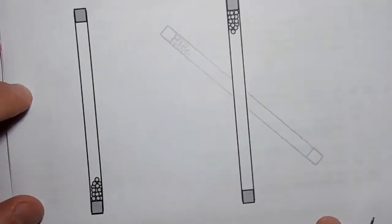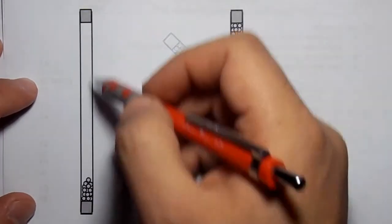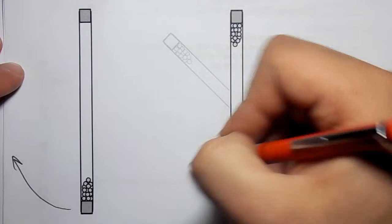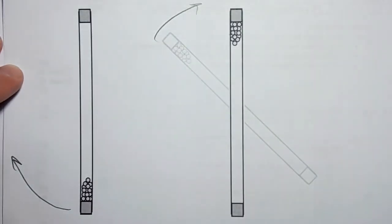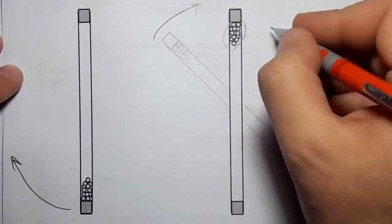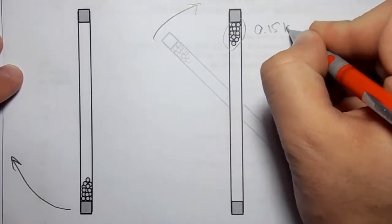Let's understand what the setup looks like. The tube was like this, and the teacher turned it upside down quickly. So the spheres, which weigh 0.15 kilograms, are now at the top.